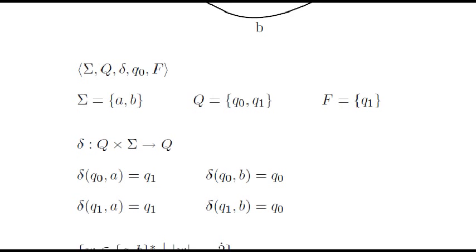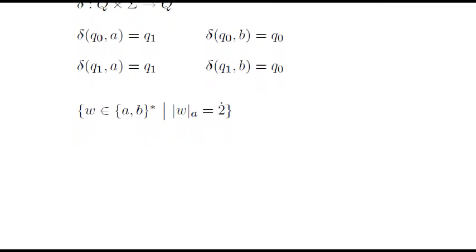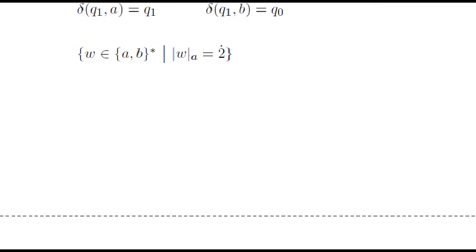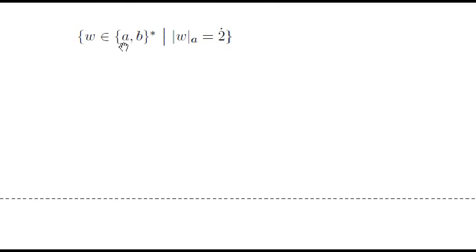Let's see another example. In this case, we'll write the language that we want to recognize, and then we'll think on how to define an automaton for this language. We are looking for an automaton recognizing words over a, b, with an even number of a's.